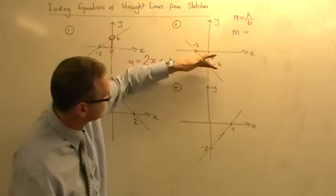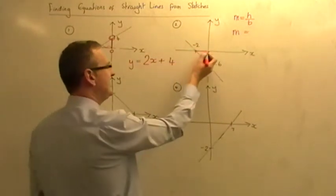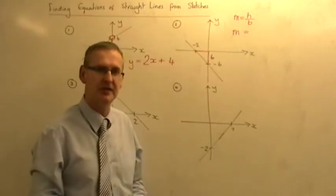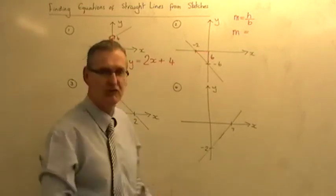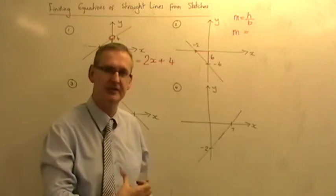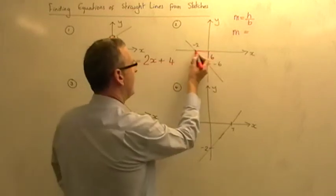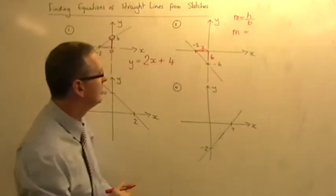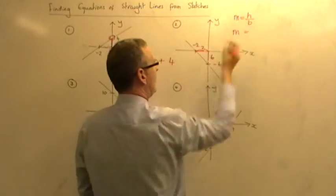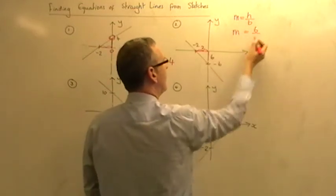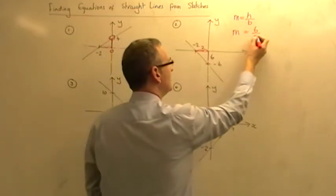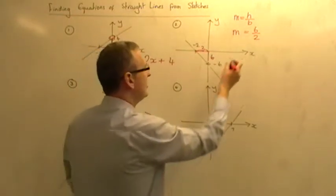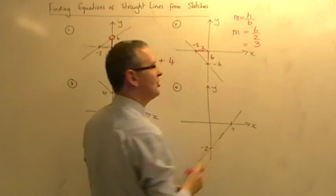And the base of that triangle, well the base we normally associate with being the bottom side of a triangle, but the base really just means the horizontal distance of the triangle, and that is from there to there, which is 2 steps. So the base is 2. So in my calculation, I do height, which is 6, divided by base, which is 2. So we do 6 over 2, 6 share by 2. You work that out, the answer is 3.